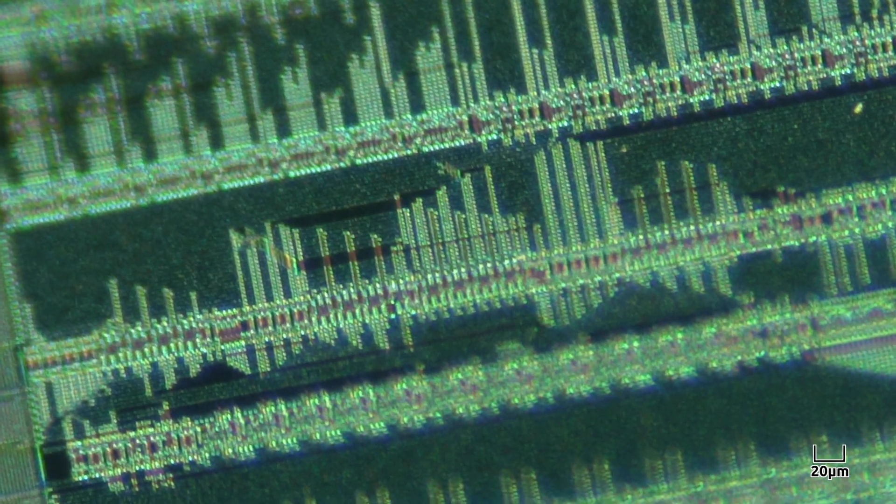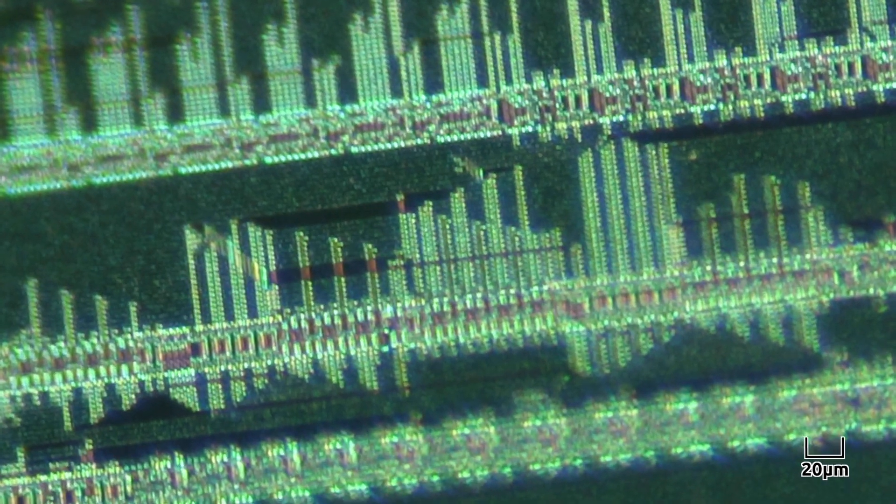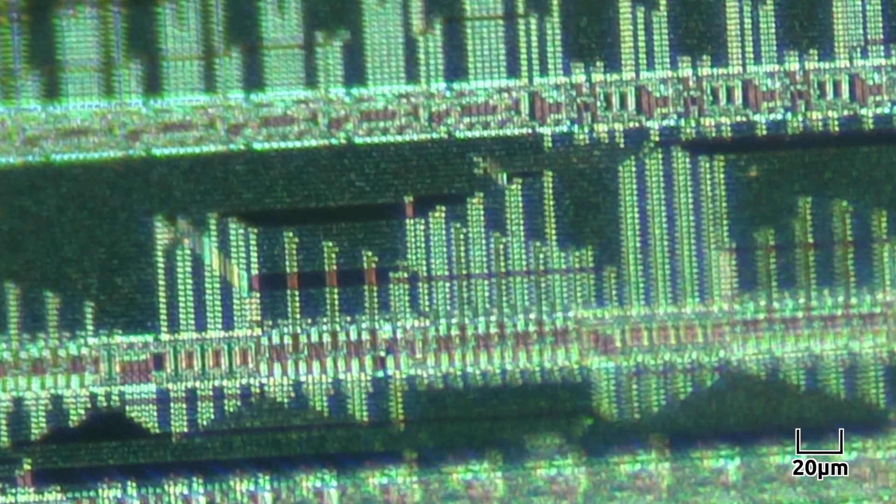Some of the shiny areas that you see are metal layers, while others are reflections off of the interface between semi-transparent oxide layers.